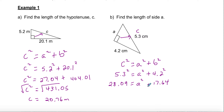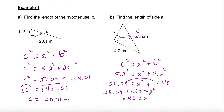Move 17.64 to the left side — because it was positive, it becomes negative: a² = 28.09 − 17.64 = 10.45. That's a squared, not a itself, so take the square root of both sides: √10.45 = 3.23 centimeters. That is side a. When you know the hypotenuse but not a leg, you always end up subtracting.